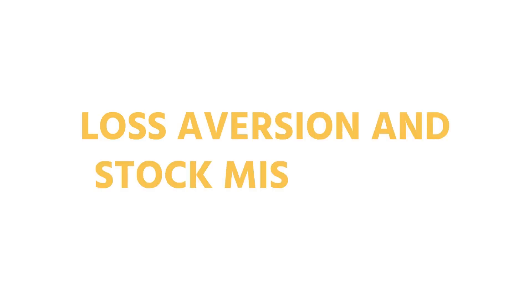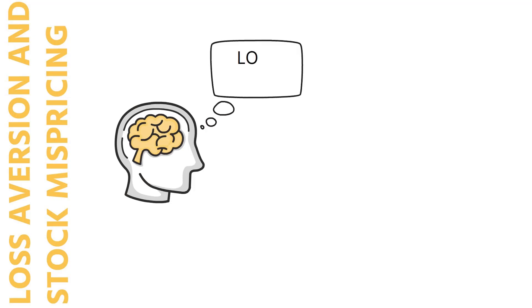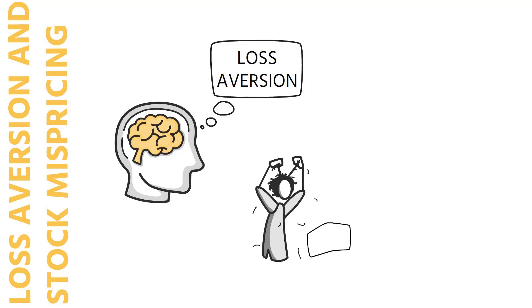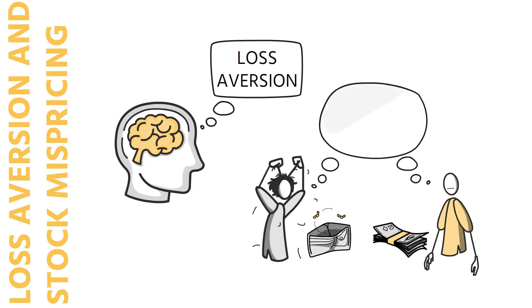Loss aversion and stock mispricing. Another important behavioral explanation of mispricing is loss aversion. As humans, investors will likely feel more pain when they make a loss than pleasure when they make a gain. For example, the pain of losing $1,000 can feel greater than the pleasure of earning $1,000. To avoid the pain, many investors adopt a loss aversion strategy.